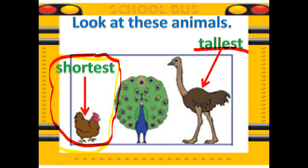Very good. Before, we discussed the tallest — the greatest in height. Now, we will discuss shortest: the least in height, or the smallest. But when we're talking about height, we say shortest. Say: shortest.